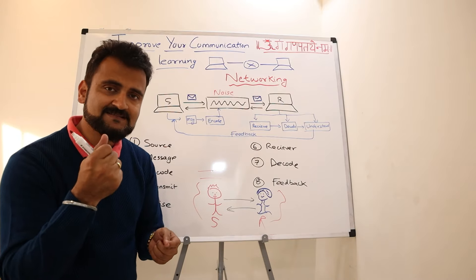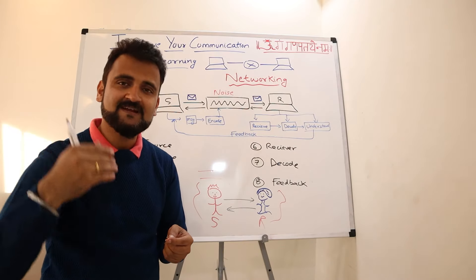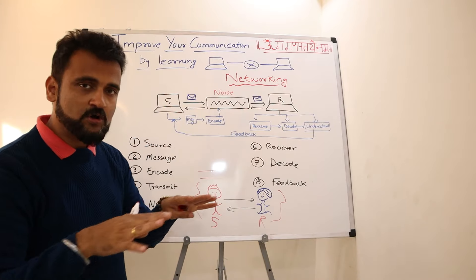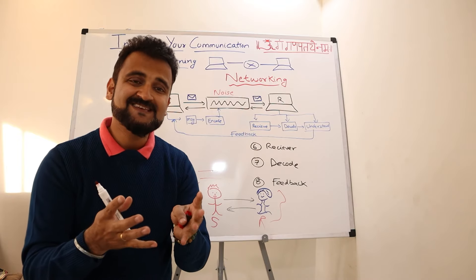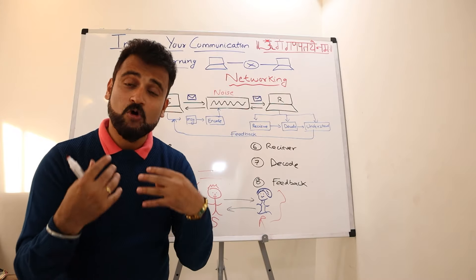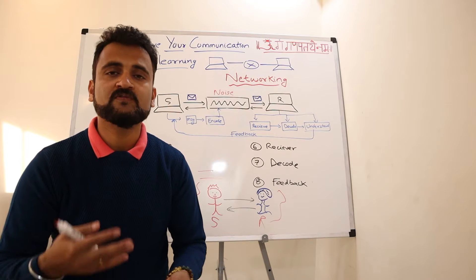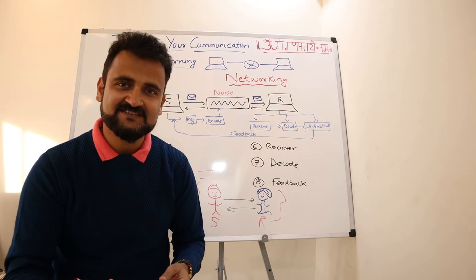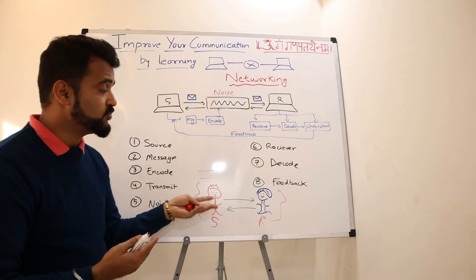Then comes encoding — adding certain symbols and signs which help the receiver comprehend the message better. In real life, your hand gestures, your eye contact, your smile, the way you are talking — all those things make the message very easy to comprehend and are very helpful for the receiver to understand. So you need to encode it, wrap your message in a way where you are not simply talking like a robot without expressions. Add symbols, signs, and gestures which will add value to your message and help the receiver have further trust in what you are saying.